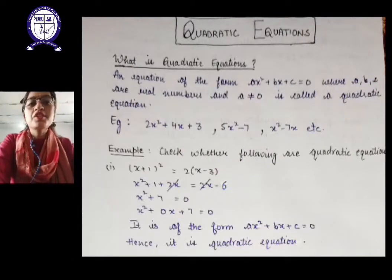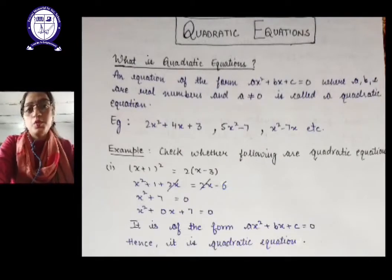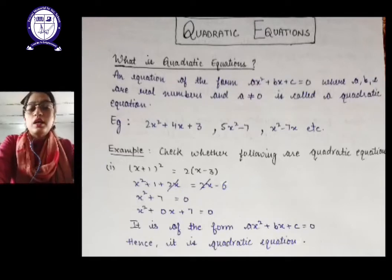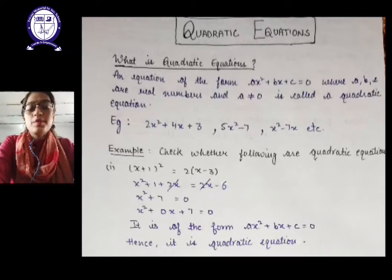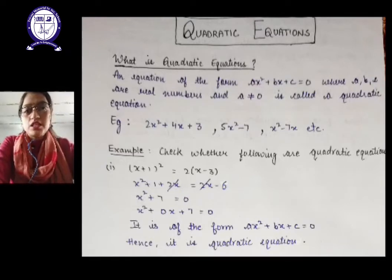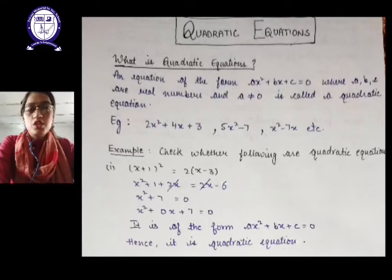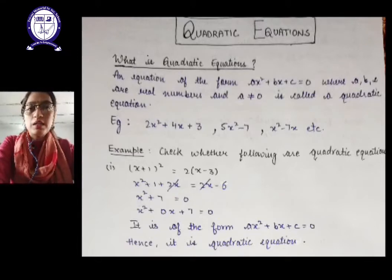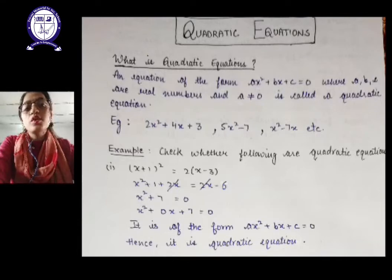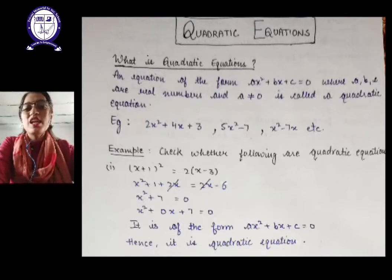The first question is: what is a quadratic equation? Any equation of the form ax² + bx + c = 0, where a, b, c are real numbers and a can never be equal to 0, is called a quadratic equation.